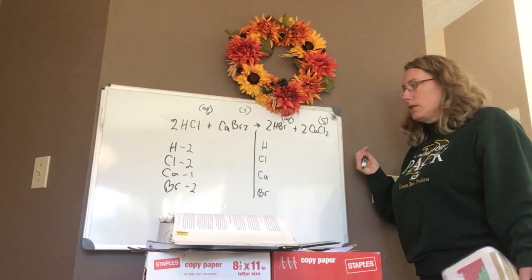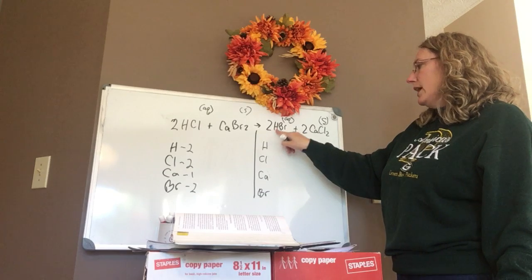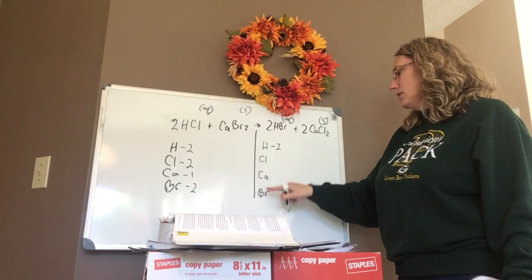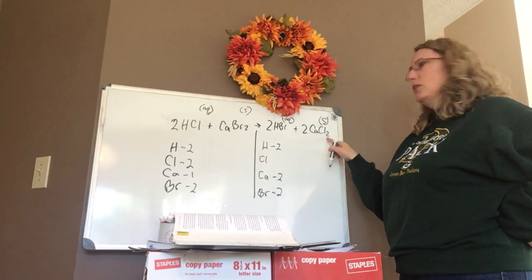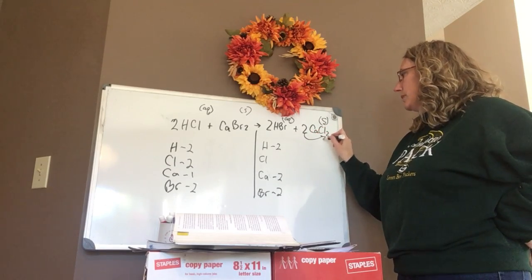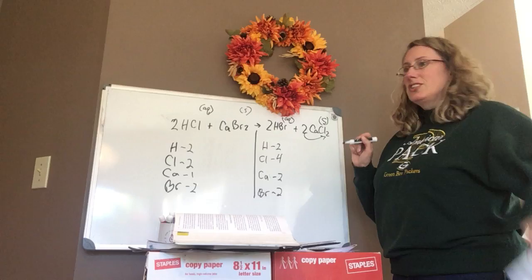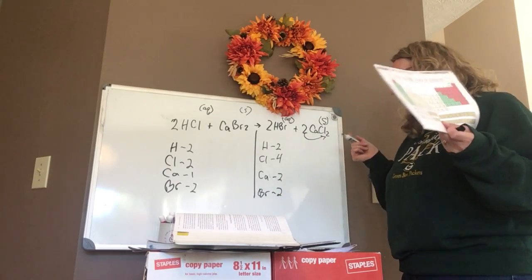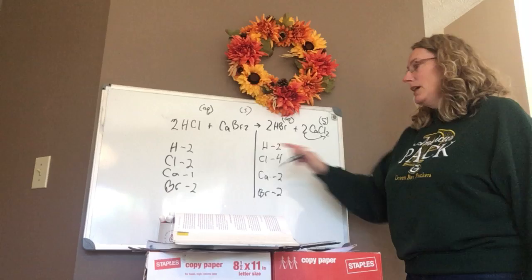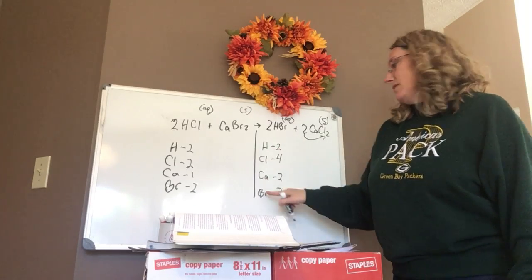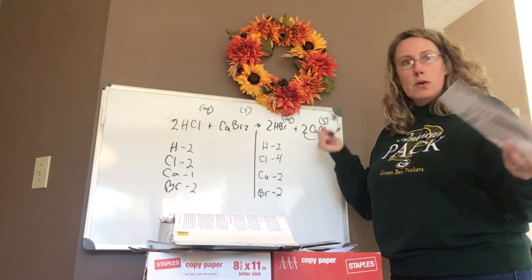So I have two hydrogens, two chlorines, one calcium, and two bromines on this side. Now the stoichiometric coefficient multiplies out — so this is two hydrogens, two bromines, two calciums. But how many chlorines do I have? This two multiplies by that two — so that means I have four chlorines on this side. Is this a balanced equation? Hydrogen's fine, bromine's fine, but calcium and chlorine don't match. So the answer is no, you don't have a balanced equation.